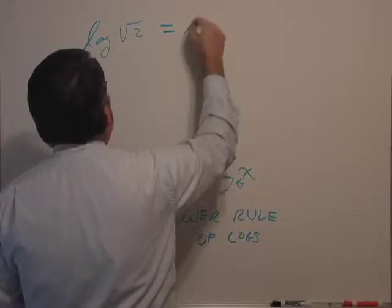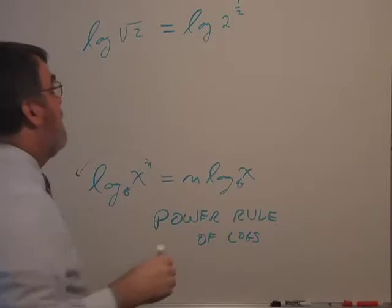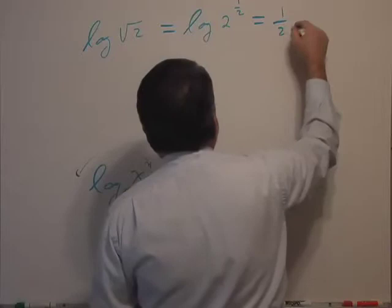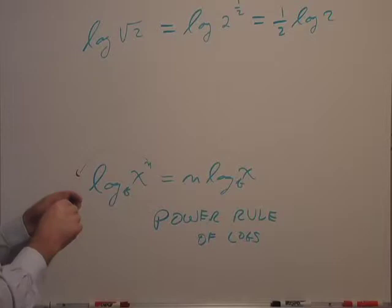And I think of square root of two as two to the one half power. So this is the log of two to the one half power. Then this is equal to, by the power rule, the power comes in front as one half log base two.